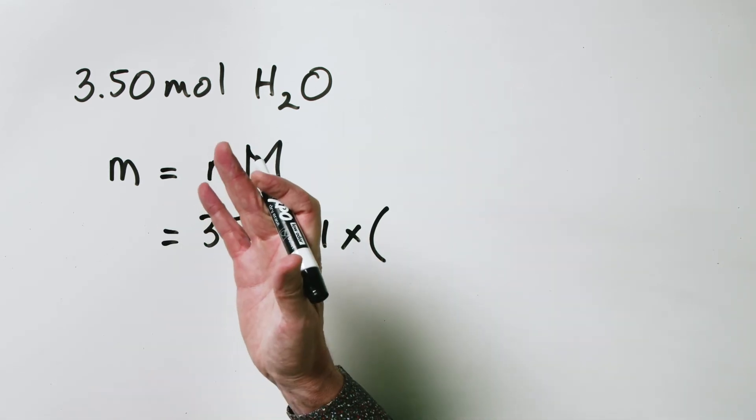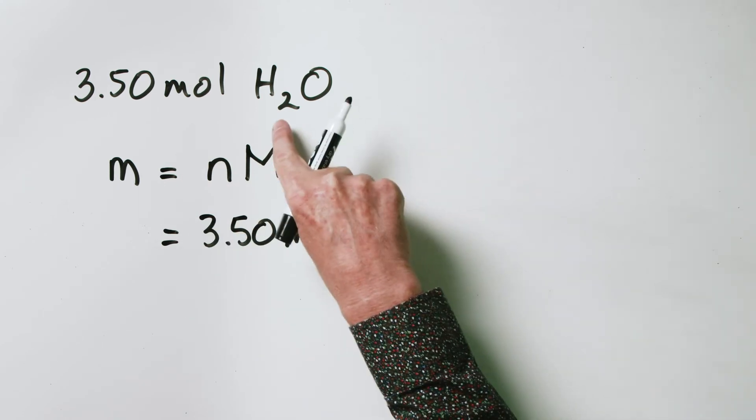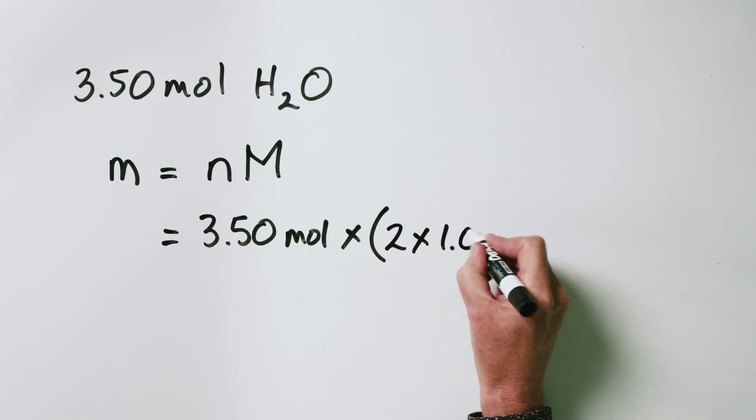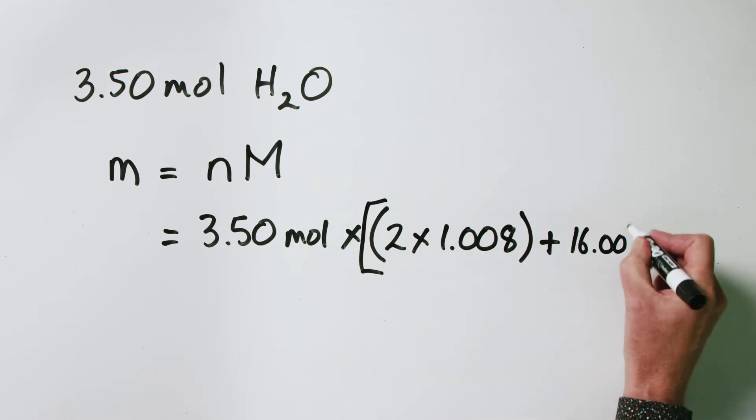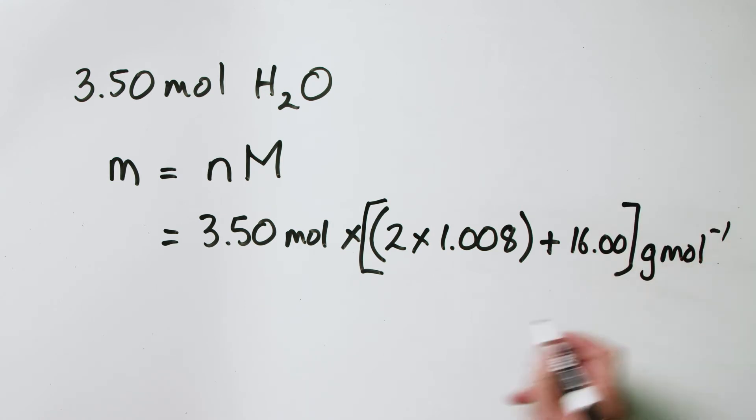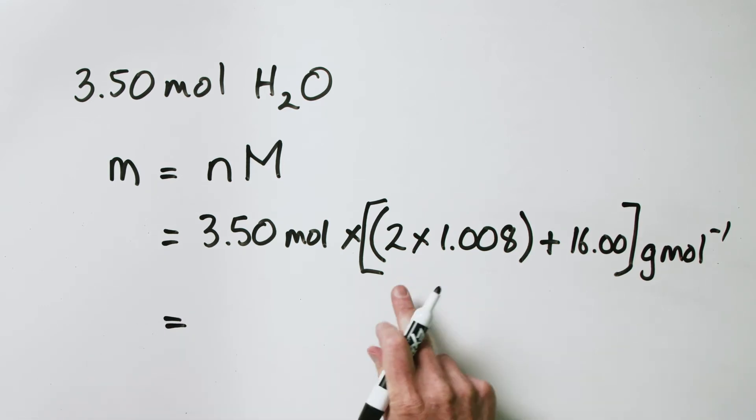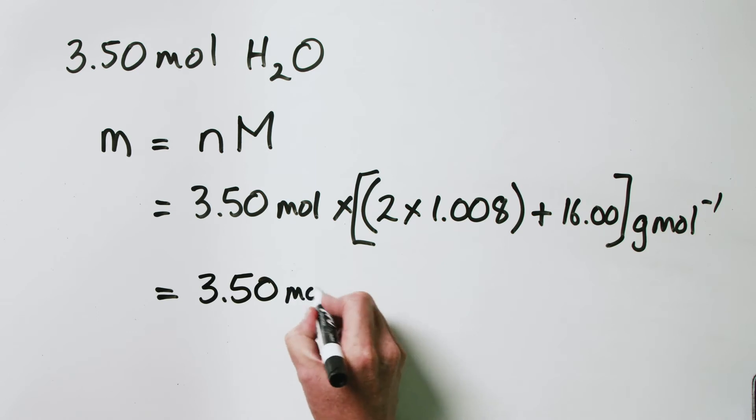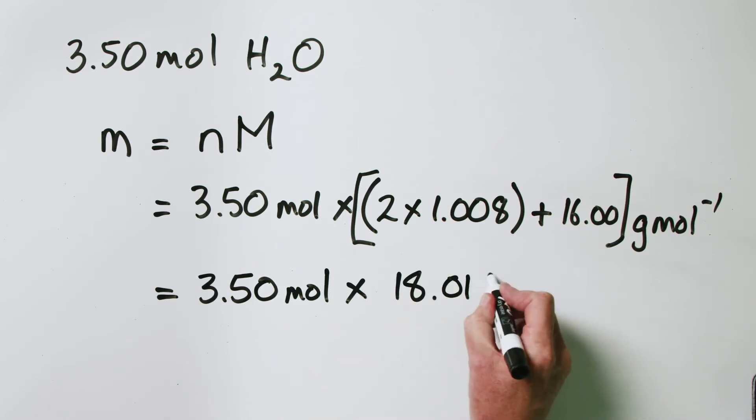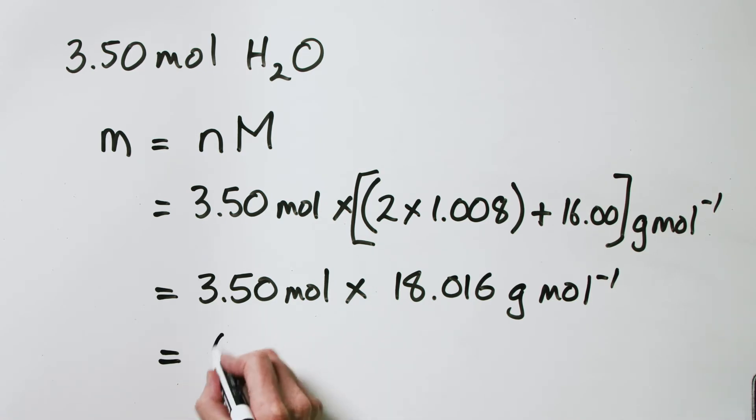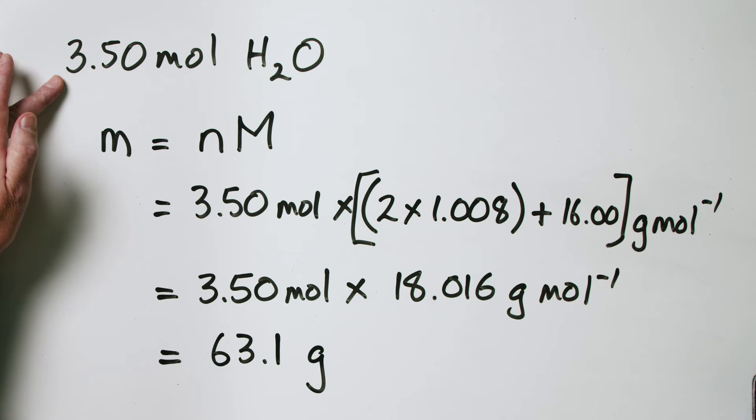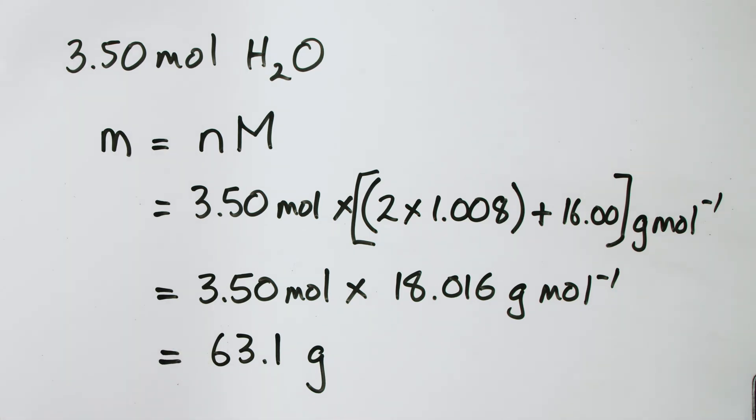Where do we get the molar mass of water? We go to the periodic table again. The molar mass of water is two times the molar mass of hydrogen, which is 1.008, plus the molar mass of oxygen, which is 16.00, with units of grams per mole. So we get 3.50 multiplied by 18.016 grams per mole. We do the math and come out with 63.1 grams. That is the mass corresponding to 3.5 moles of water.